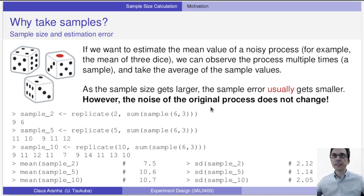As the sample size gets larger, the sample error usually gets smaller. However, the noise of the original process does not change. So increasing the sample size is a way to reduce the noise of a process that we are observing.